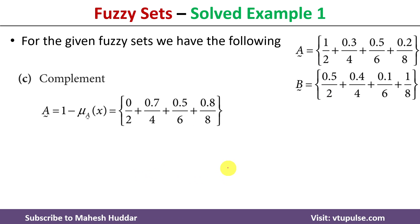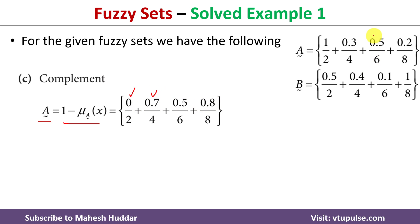The next operation is the complement. The complement of a fuzzy set is always equivalent to 1 minus the degree of membership of an element in fuzzy set A. For element 2, degree of membership in A is 1, so 1 minus 1 equals 0. For element 4, degree of membership is 0.3, so 1 minus 0.3 equals 0.7. For element 6, it is 1 minus 0.5 equals 0.5. For element 8, 1 minus 0.2 equals 0.8.